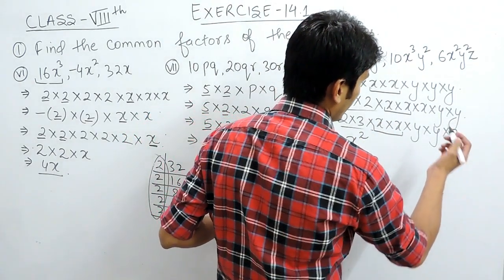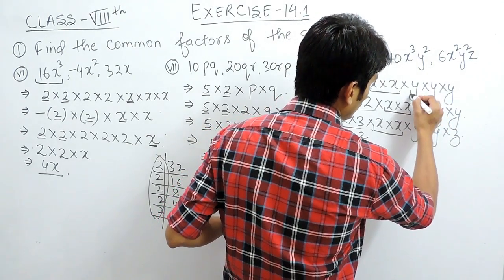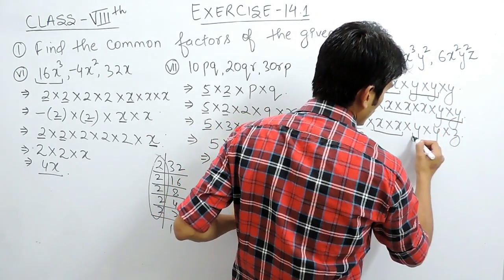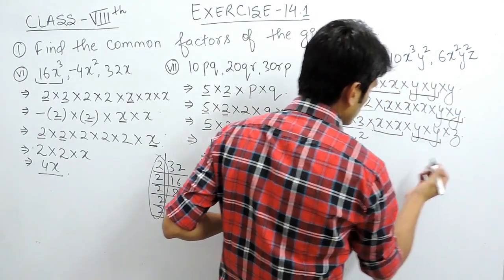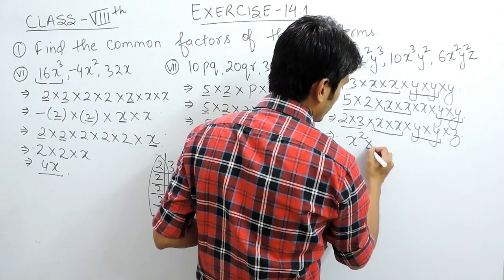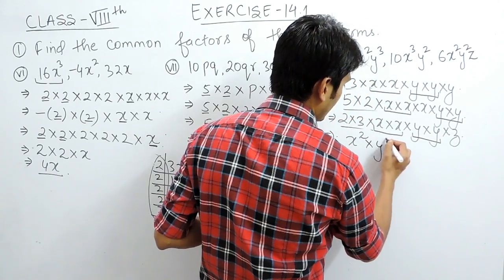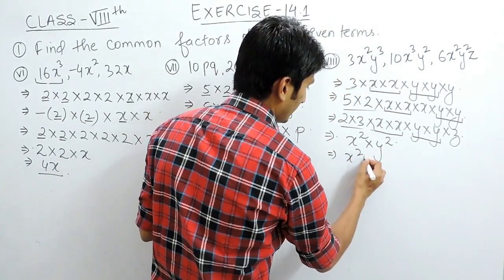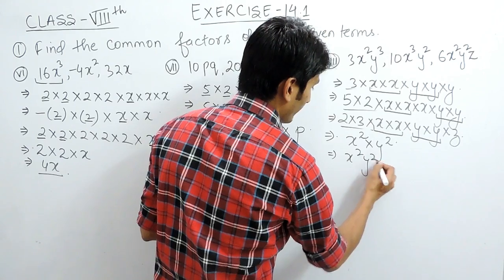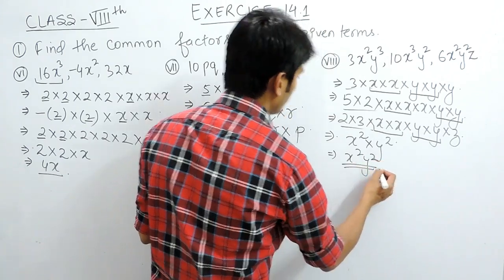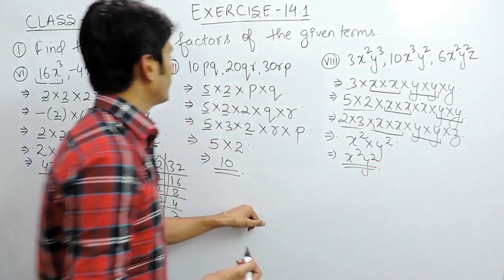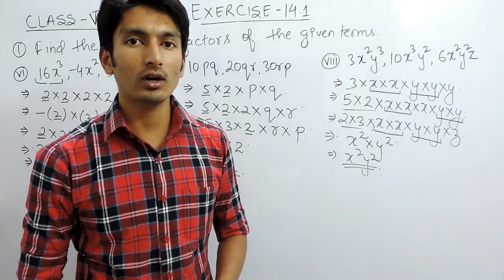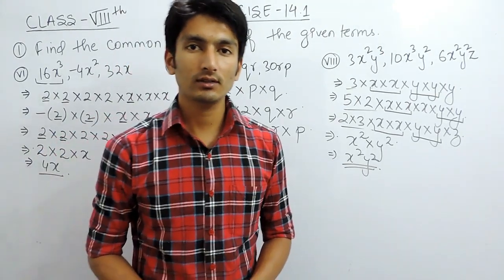There are also two y's common in all three terms, so that gives y². Therefore, x²y² is the common factor for this third part. This is how we solve this question.